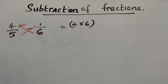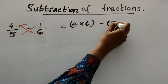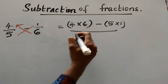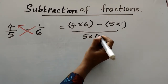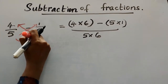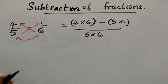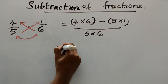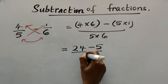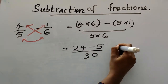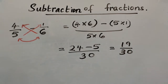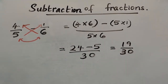For unlike fractions, using cross multiplication: 5 into 4 minus 6 into 1, over 5 into 6 — that gives us 24 minus 5 by 30. So 24 minus 5 is 19, giving us 19 by 30. Addition and subtraction of unlike fractions is very easy.